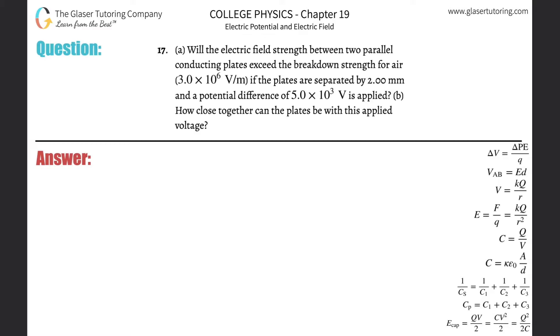Number 17, letter A. Will the electric field strength between two parallel conducting plates exceed the breakdown strength for air, which is 3 times 10 to the 6 volts per meter, if the plates are separated by 2 millimeters and a potential difference of 5 times 10 to 3 volts is applied?